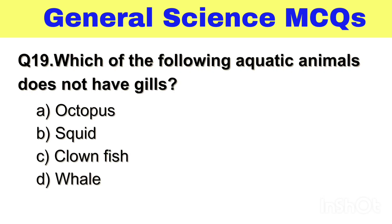Question No. 19. Which of the following aquatic animals does not have gills? Option A. Octopus, B. Squid, C. Clownfish, D. Whale. The right answer, Option D. Whale.